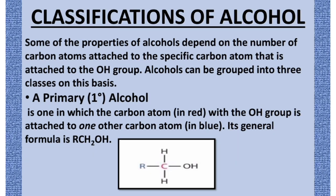Next we have the classification of alcohols. Some properties of alcohol depend on the number of carbon atoms attached to the specific carbon atom that is attached to the OH group. Alcohols can be grouped into three classes: primary alcohol, secondary alcohol, and tertiary alcohol. In primary alcohol, the carbon atom bearing the OH group is attached to one other carbon atom. Its general formula is RCH2OH.